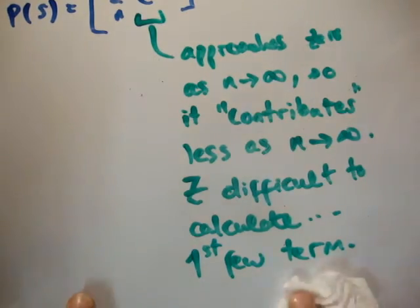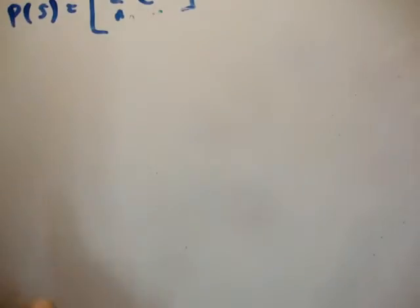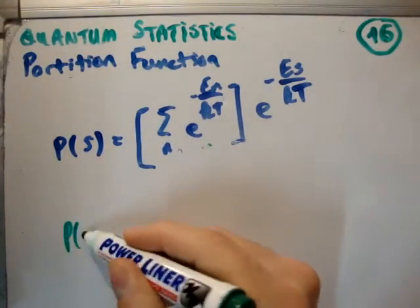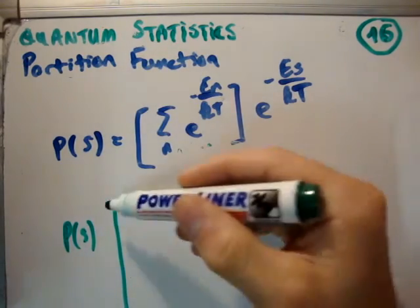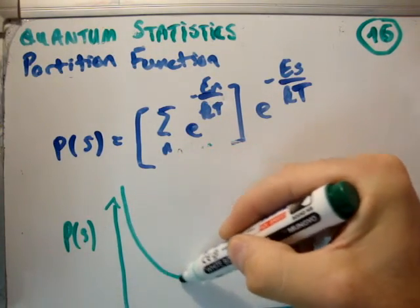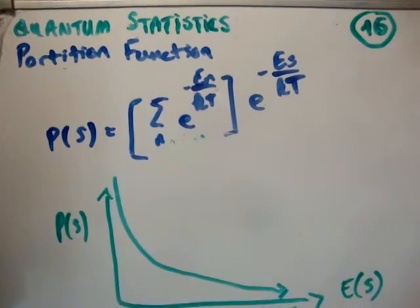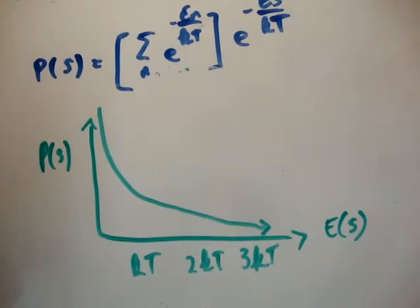Now what happens if we go and plot this whole function, this probability factor, including the Boltzmann factor and the partition function? Well, if we have p sub s, which is our probability on the y axis, and on the x axis we have energy in terms of kt, 2 kt, 3 kt, what you'll have is this exponential decay. So the probability of an event occurring decays exponentially as you increase the energy.